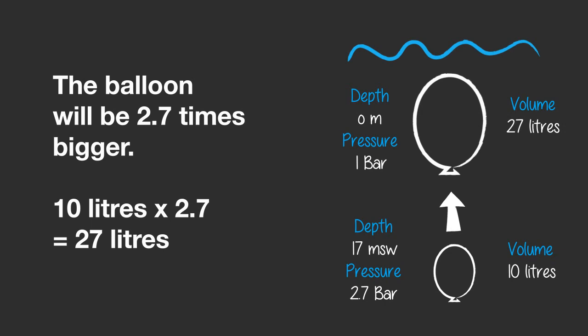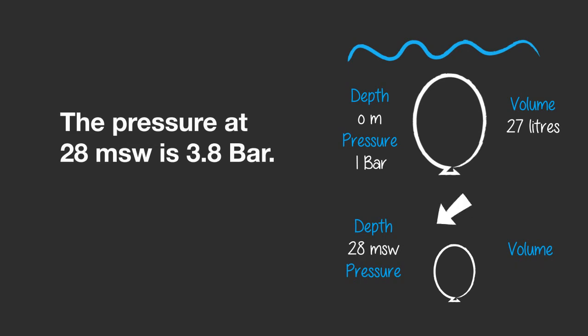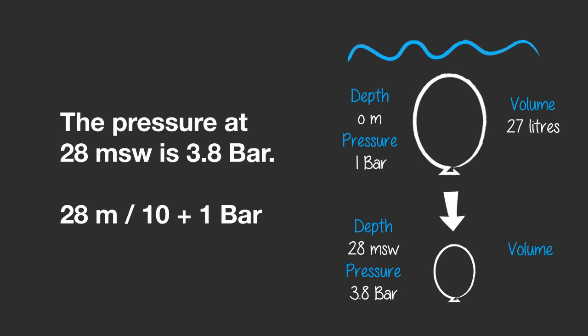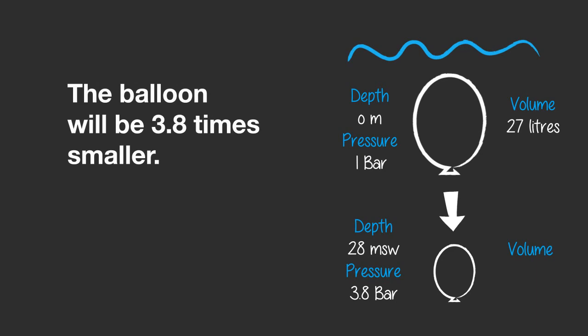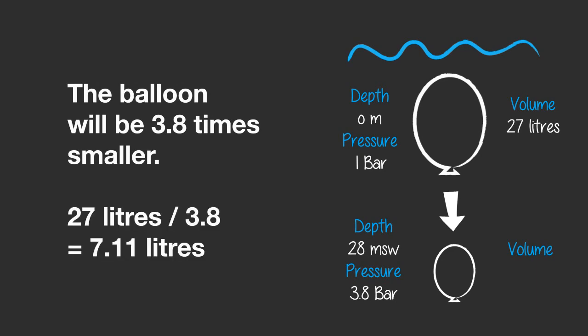At the surface, the balloon has a volume of 27 liters. Now let's take the balloon to the second depth of 28 meters of seawater. The pressure at 28 meters of seawater is 3.8 bar: 28 divided by 10, plus 1. So the balloon will be 3.8 times smaller, and 27 liters divided by 3.8 equals 7.11 liters. So the new volume of the balloon is 7.11 liters.